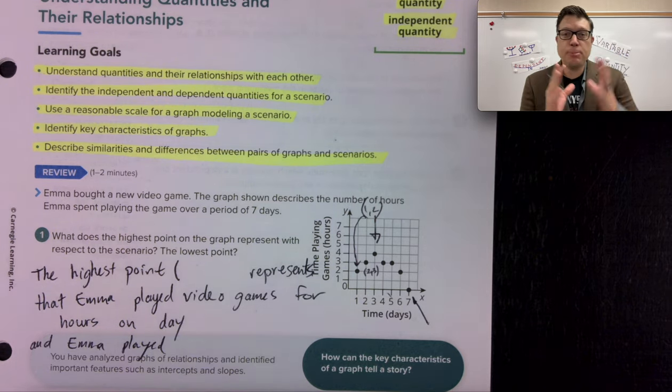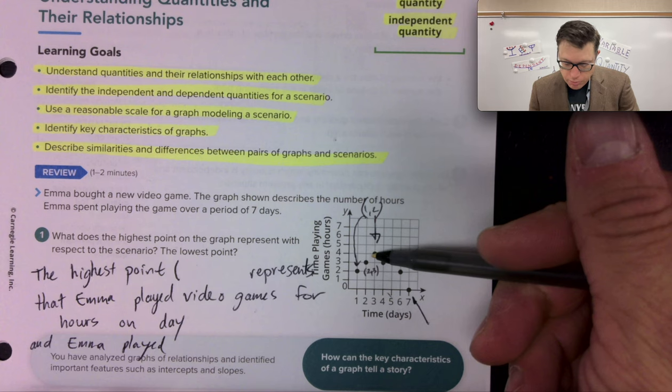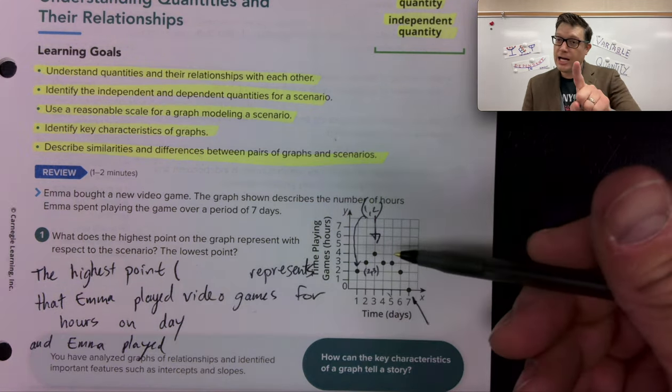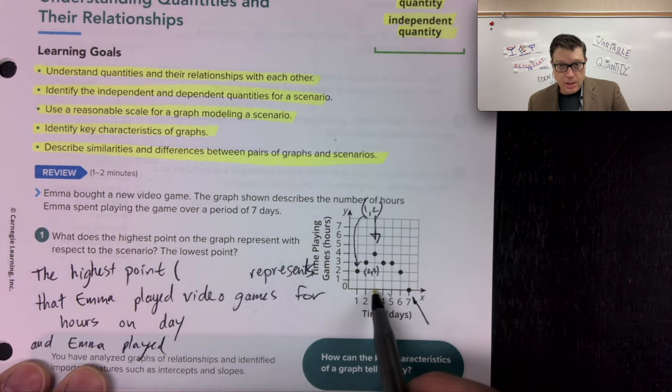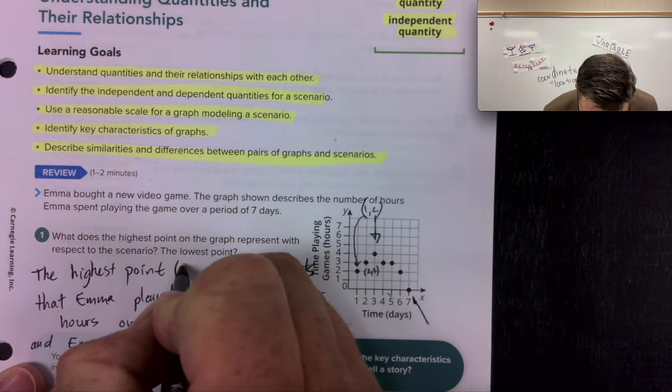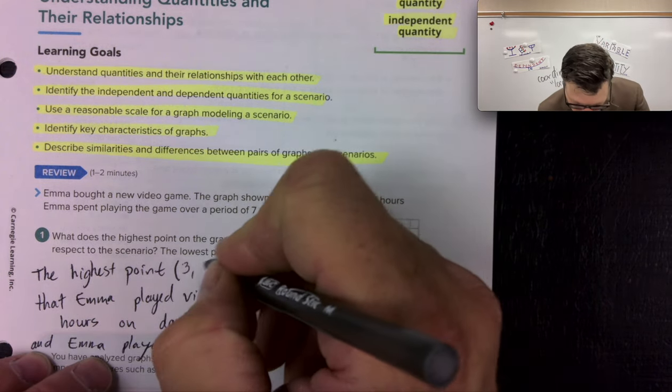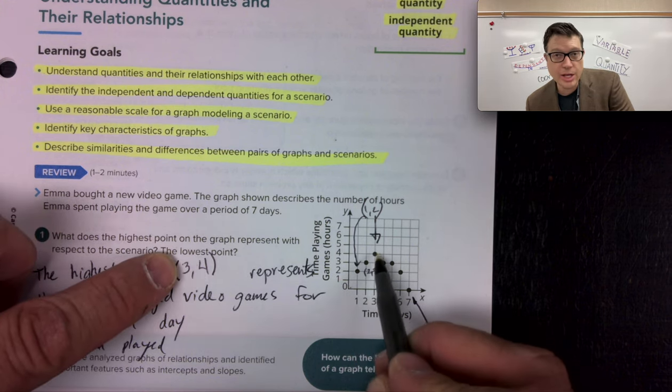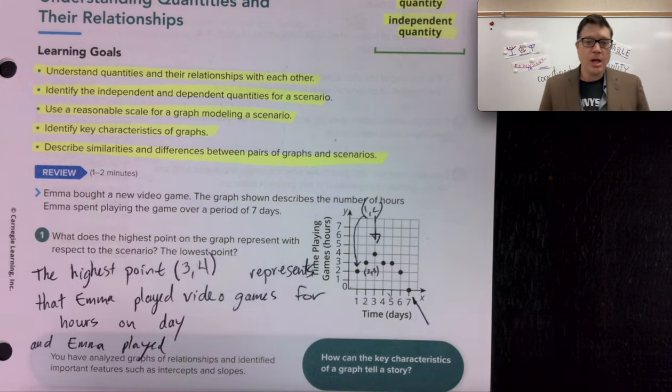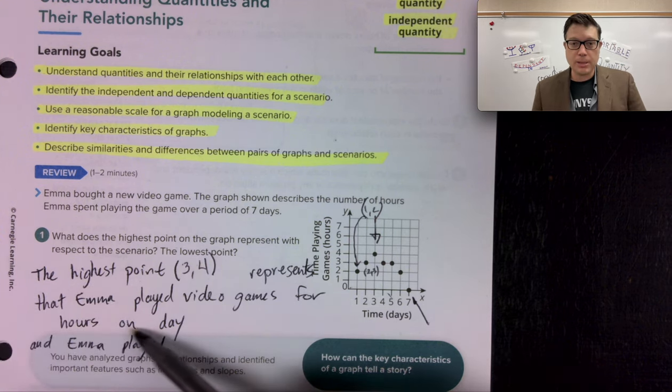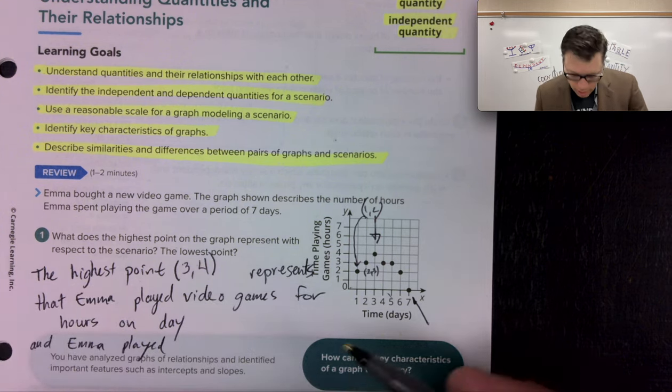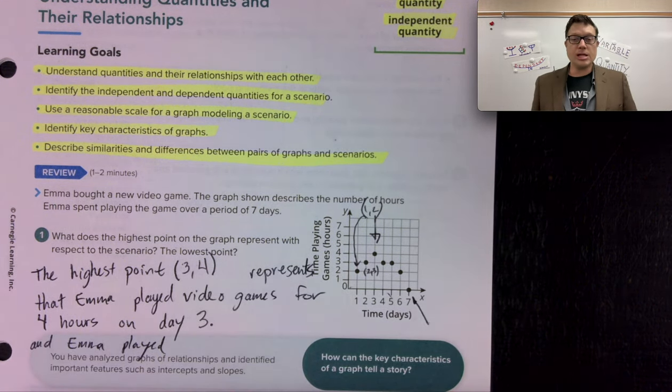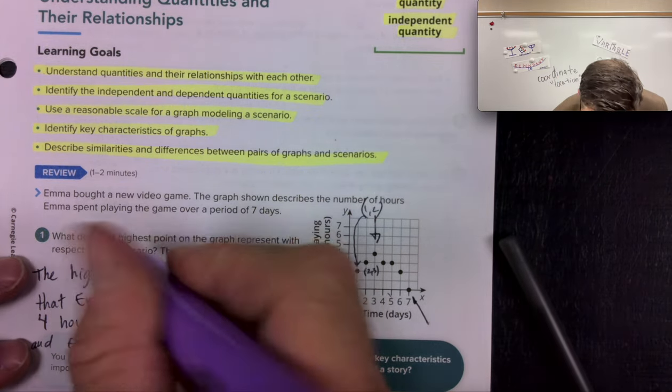So the highest point on the graph is right here. Because if you think about this like a mountain, this is the highest points on the graph. And like I said, it's located at three, four, three to the right, and four up and down, four up. So starting from here, go three, three, that's the first number, and then go four, that's the second number. That highest point represents that Emma played video games for four hours on day three. That's the highest point. That answers this question.